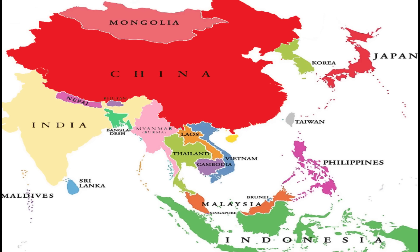When we speak of Asia in the Fallout universe, our primary source of information stems from China. Given the fact that they and the United States were the two world superpowers, and therefore the key instigators of the Great War, we have a large amount of source material on the nation. In regards to the other nations of Asia, sources do become a little less in-depth. We're able to state with absolute clarity that a multitude of the surrounding nations had been annexed, similar to the US invasion of Canada.